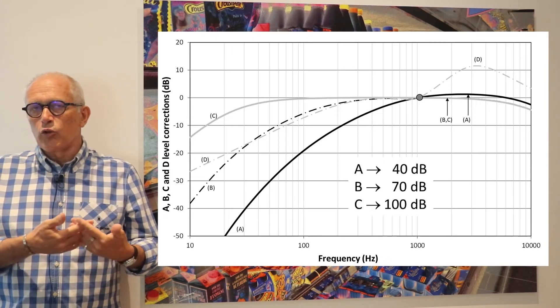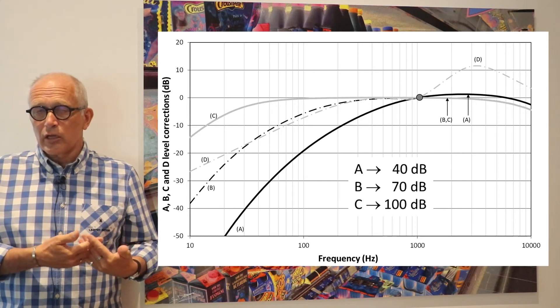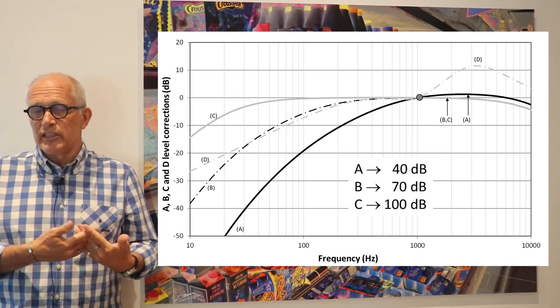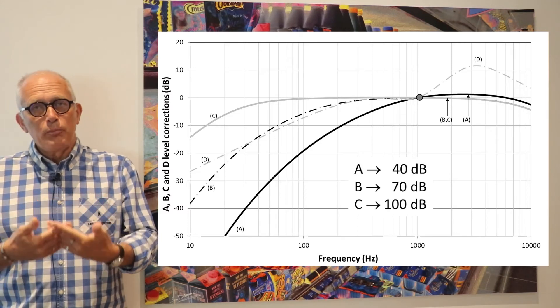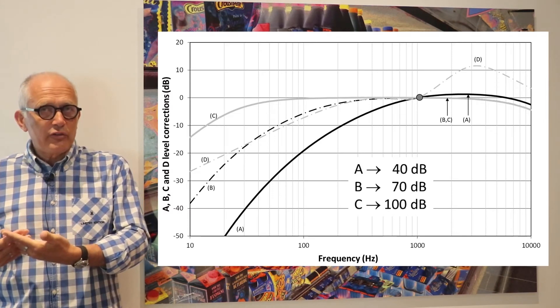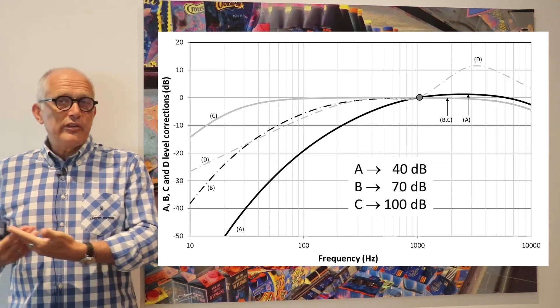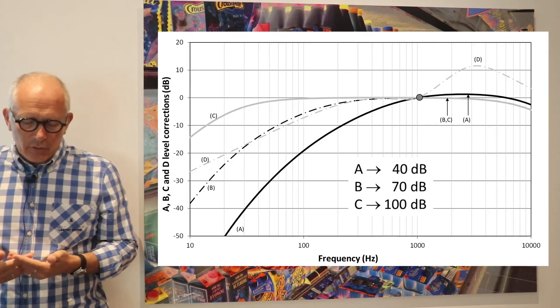The A filter is normally for low level sounds because it is based on the equal loudness contour at 40 decibels. The B filter corresponds to the 70 decibel curve and C filter to the 100 decibel curve.